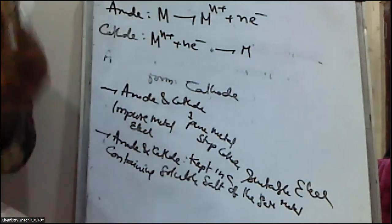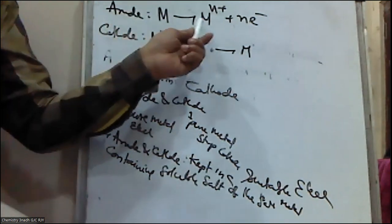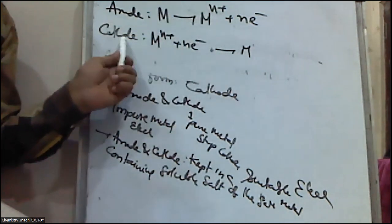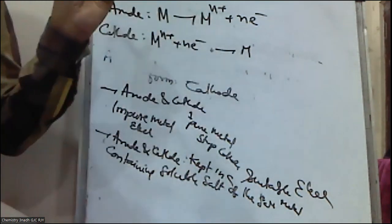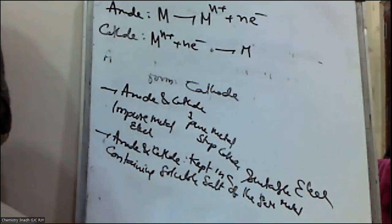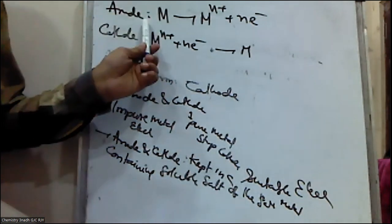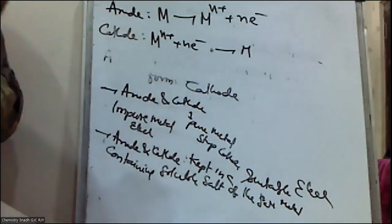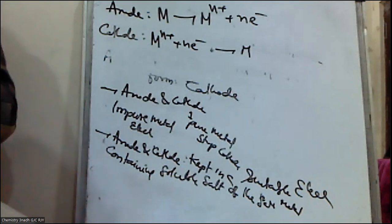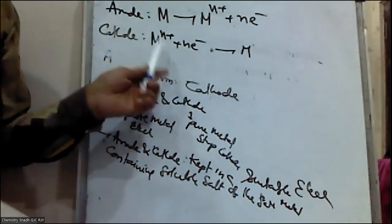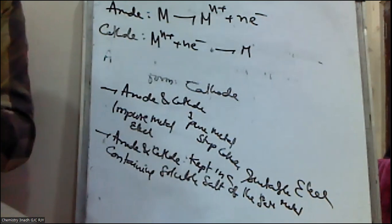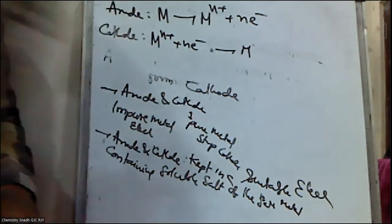Initially, the anode content decomposes during electrolysis, forms Mn⁺ ions, and goes into the solution. These Mn⁺ ions further move to the cathode and deposit as the metal in pure form. Whatever metal we need to refine gets deposited on the cathode in pure form. The impurities present in the anode remain as anode mud.